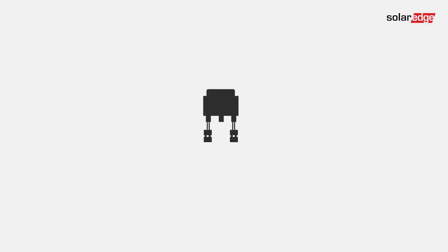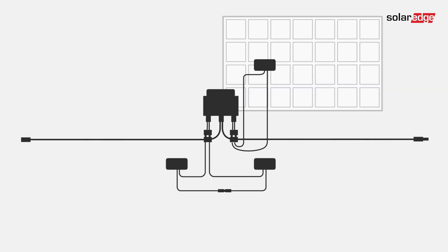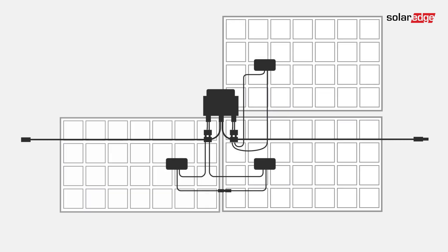In case the number of PV modules in the string is not a multiple of four, it is allowed to install one M1600 power optimizer in a single string connected to one, two, or three PV modules.